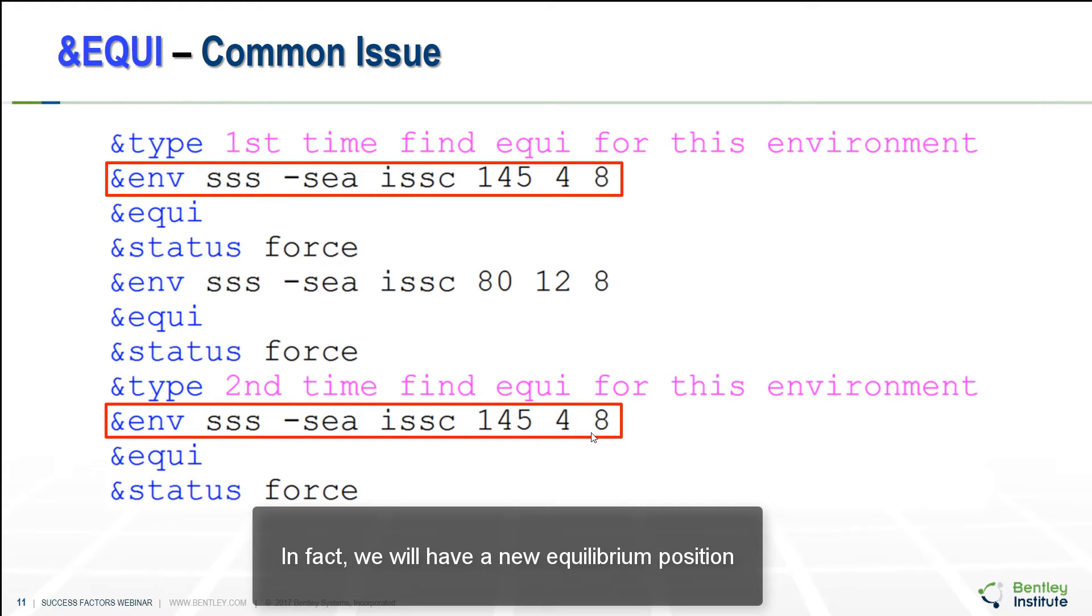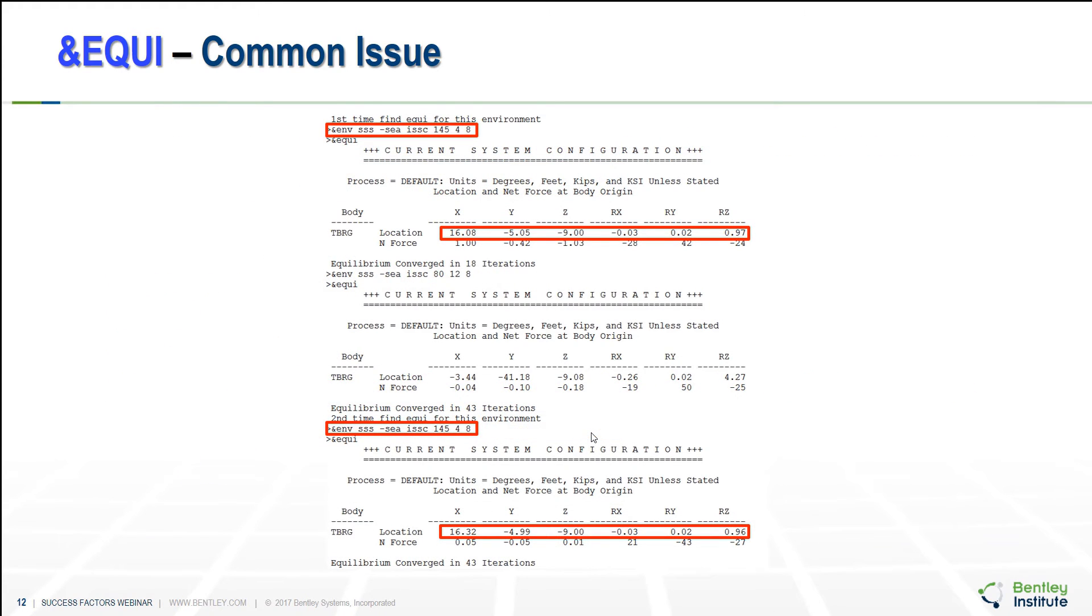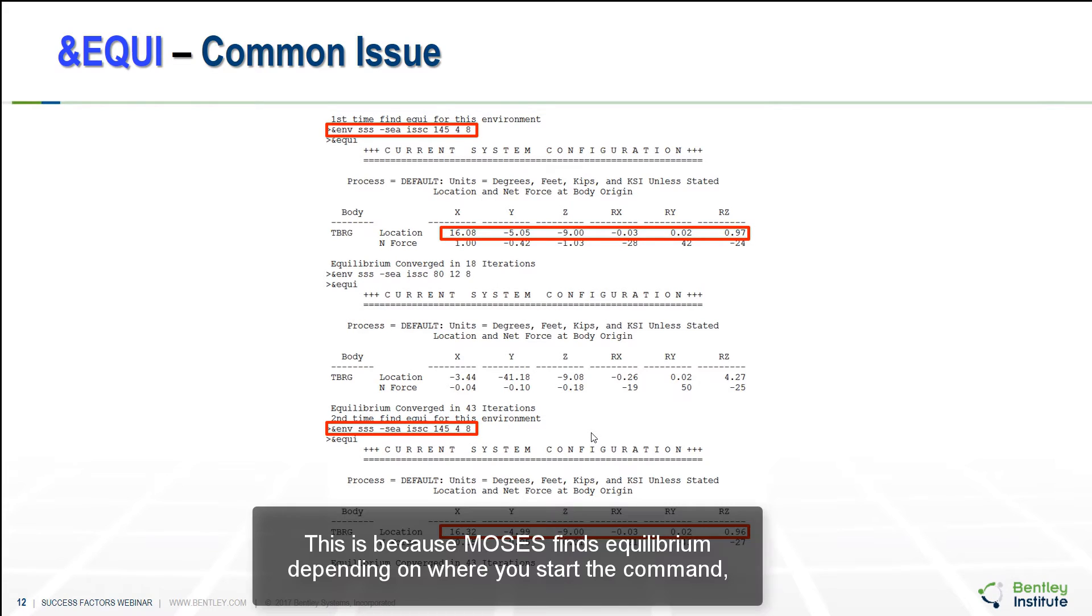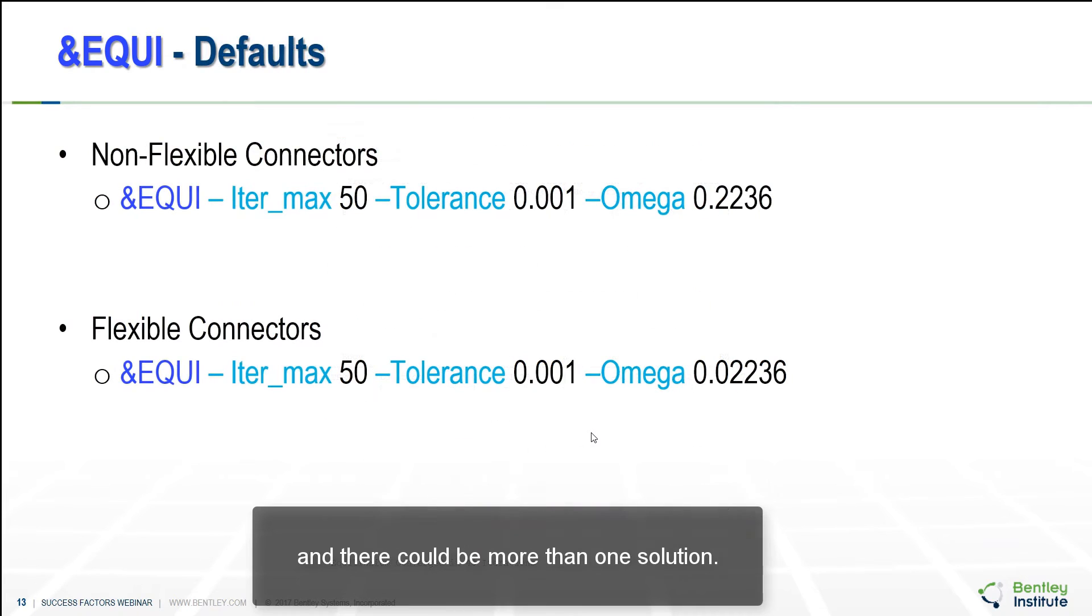In fact, we will have a new equilibrium position when the environmental forces are applied to the system. This is because Moses finding equilibrium by depending on where you start the command and the equilibrium could arrive at a different solution and there could be more than one solution. This is very useful information that you should know for you to fill and to decide what you should do once you have problem in equilibrium.